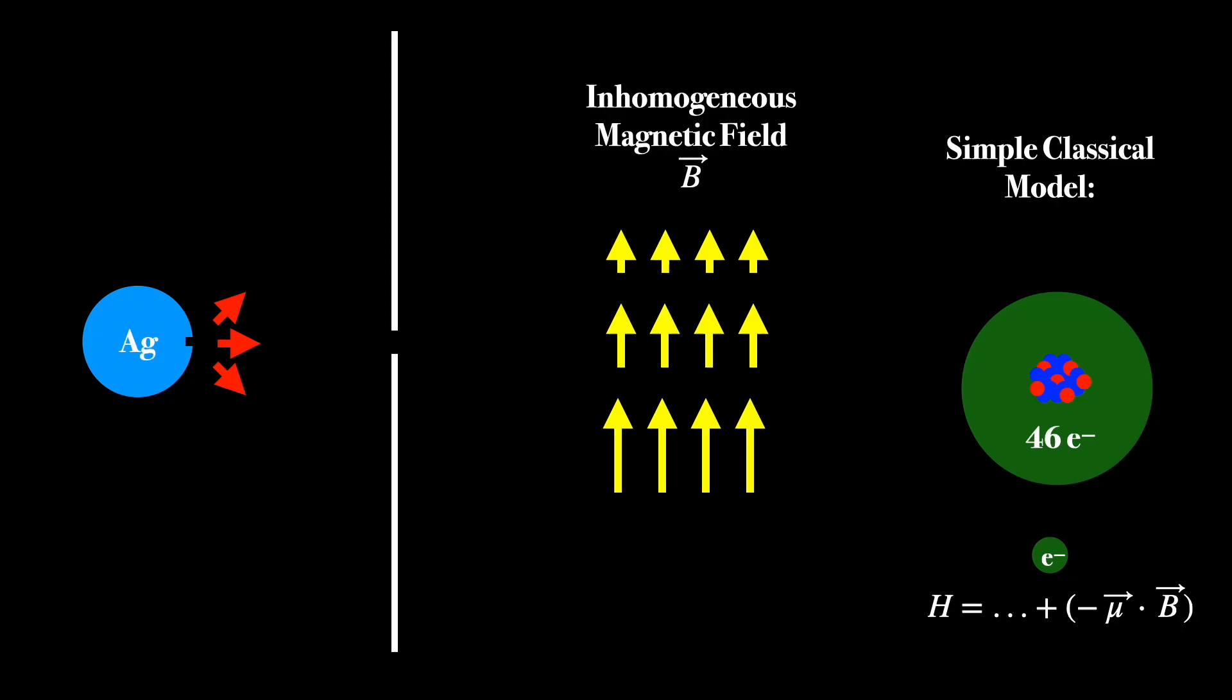This is significant because the force that the atom will experience as it goes through the field is given by this next equation, which as you can see is the partial derivative with respect to z of their dot product. This is why it's very important that this magnetic field is inhomogeneous. Otherwise, this derivative would be zero and there would be no force on the atom. This is probably also a good time to clarify that the coordinates that we will be working in here are that the positive z direction is up and the positive x direction is to the right.